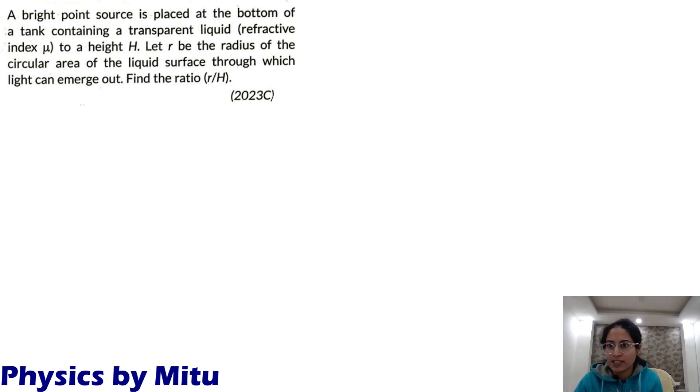A bright point source is placed at the bottom of a tank containing a transparent liquid, refractive index mu to a height h. Let r be the radius of the circular area of the liquid surface through which light can emerge out. Find the ratio r by h.